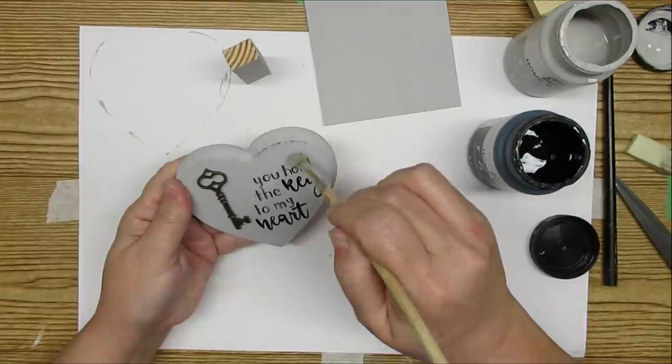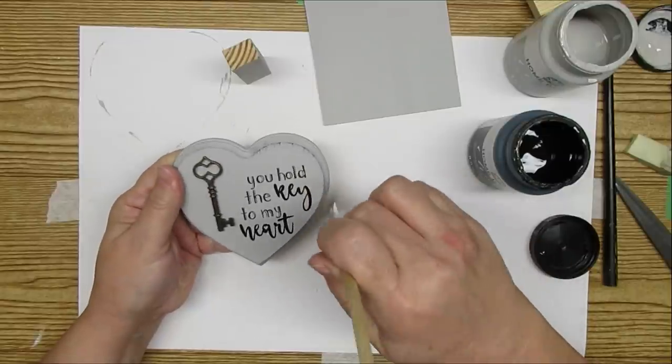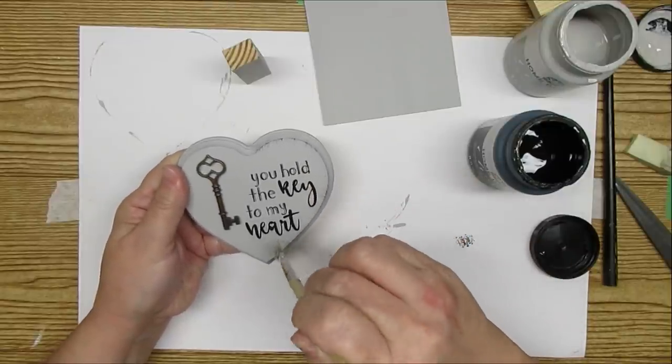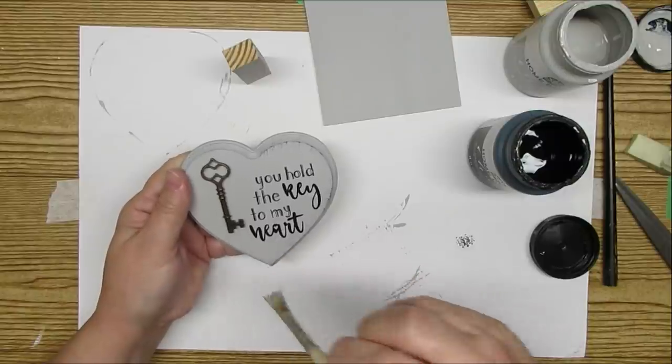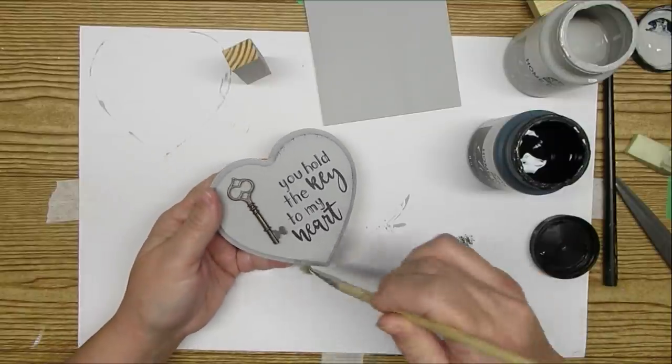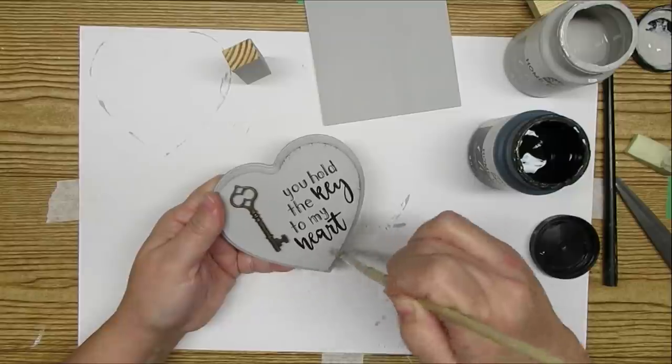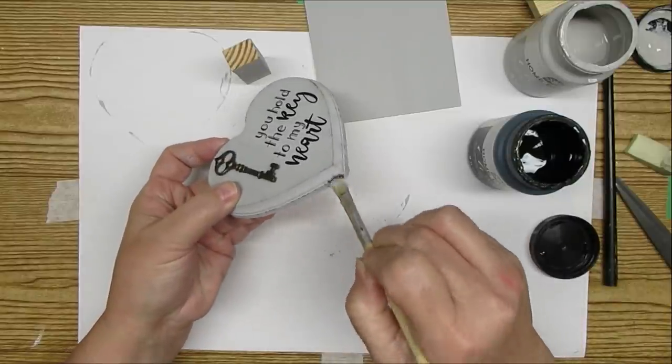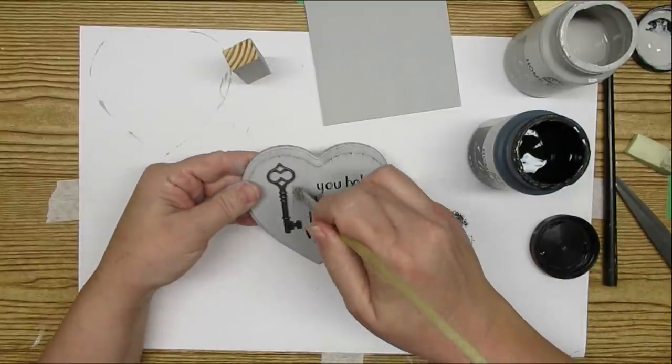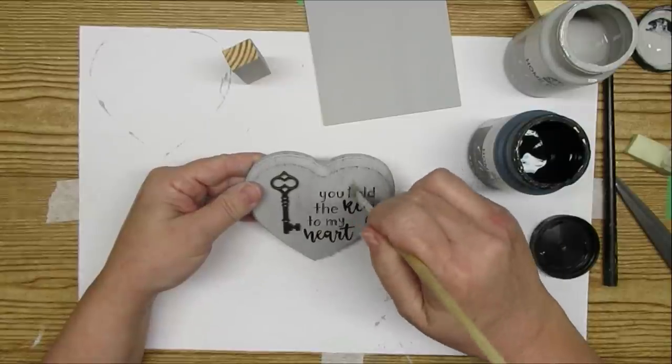Using a rough brush and some black paint, I'm just going to go around the edges of the heart and give it some distressing. That will just bring out all of the lines in the carvings around the edges. I also just ran my brush across the top of the heart just to add a little bit more texture.